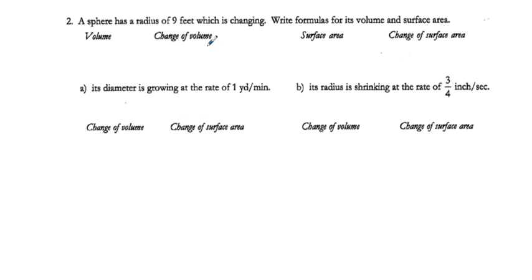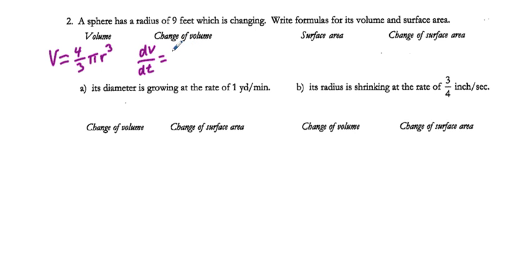Problem 2: a sphere has a radius of 9 feet which is changing. The standard formula for volume is (4/3)πr³. The change in volume — taking the first derivative — gives dV/dt = (4/3)π times 3r² · dR/dt, and the three over three cancels, leaving dV/dt = 4πr² · dR/dt.